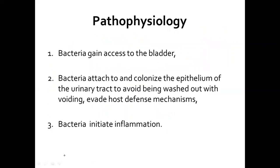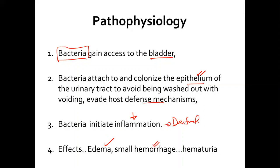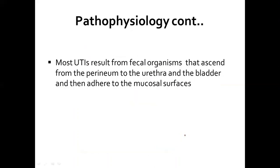The pathophysiology is quite simple. First, the bacteria has to gain access to the bladder. Once it gets there, it attaches itself to the epithelium of the bladder and colonizes that space. The colonization leads to an immunological reaction and inflammation begins. Inflammation leads to destruction of the epithelium of the bladder, and you'll also start having edema. Because of the inflammation, tiny hemorrhages can occur, which leads to hematuria. Most UTIs occur because of fecal organisms that ascend from the perineum to the urethra and the bladder.